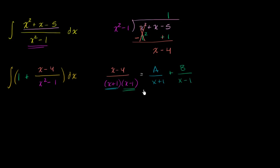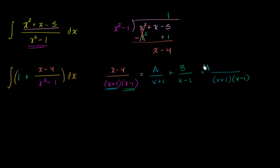To check, if we were to add those two fractions, we'd find a common denominator of x plus one times x minus one. The numerator would be A times x minus one plus B times x plus one. Expanding, that gives ax minus a plus bx plus b.